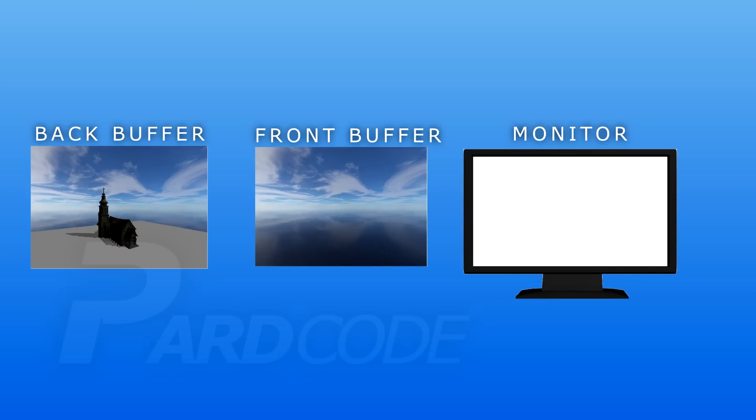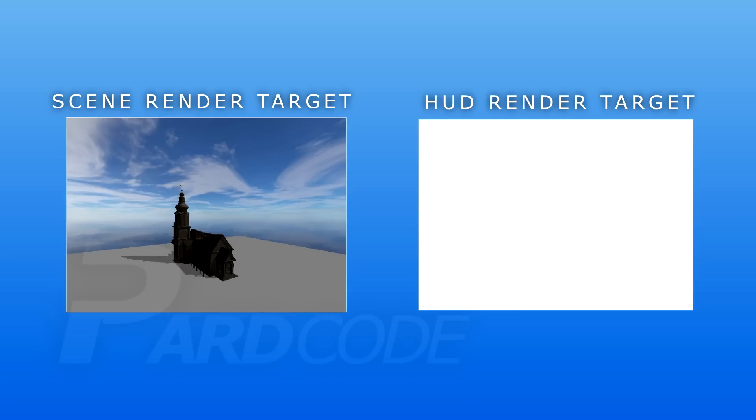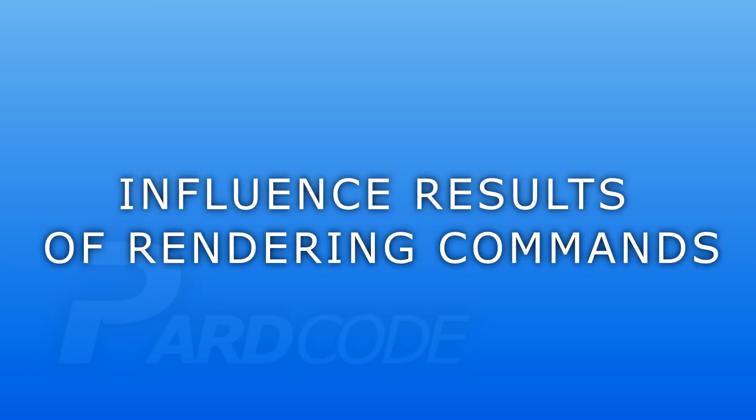An example of a render target is the back buffer of the swap chain, in which we draw the scene that is then presented on the front buffer for final presentation on the monitor. We don't have only the back buffer as a render target — we can create our own render targets. In one we can draw part of a scene, in another we can draw only the HUD, and so on. Also, the device context allows us to set pipeline states that we will see in the next tutorials — for now we can say that they influence the final results of our rendering commands.